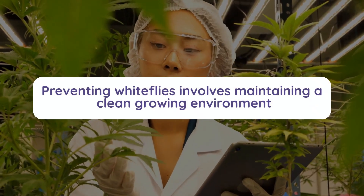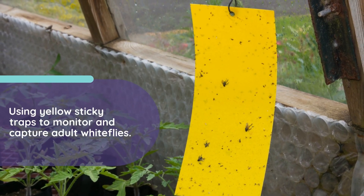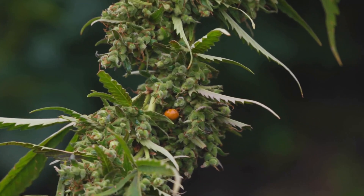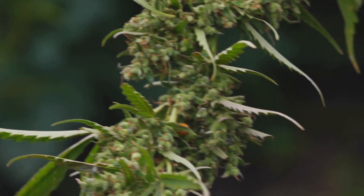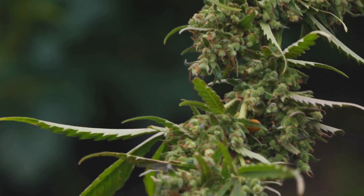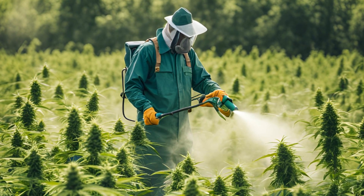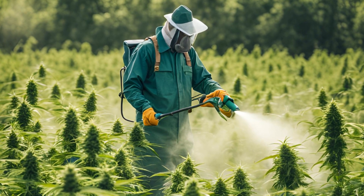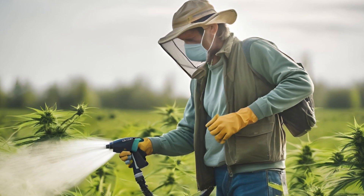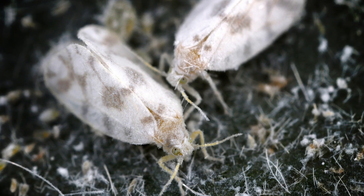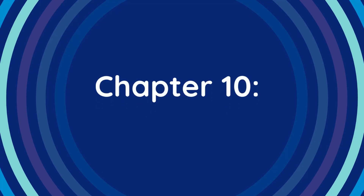Preventing whiteflies involves maintaining a clean growing environment and using yellow sticky traps to monitor and capture adult whiteflies. Introducing beneficial insects such as ladybugs, lacewings, and parasitic wasps can help control whitefly populations. To manage an active infestation, spraying plants with insecticidal soaps or neem oil can be effective. Ensuring thorough coverage, especially on the undersides of leaves, is crucial. Repeated applications may be necessary to fully control whiteflies and protect your plants.